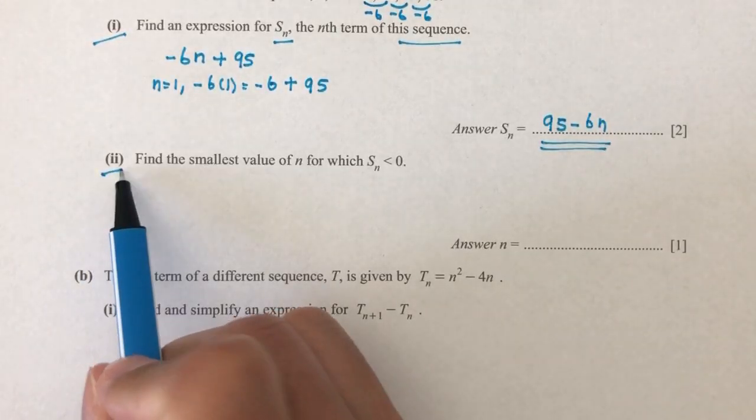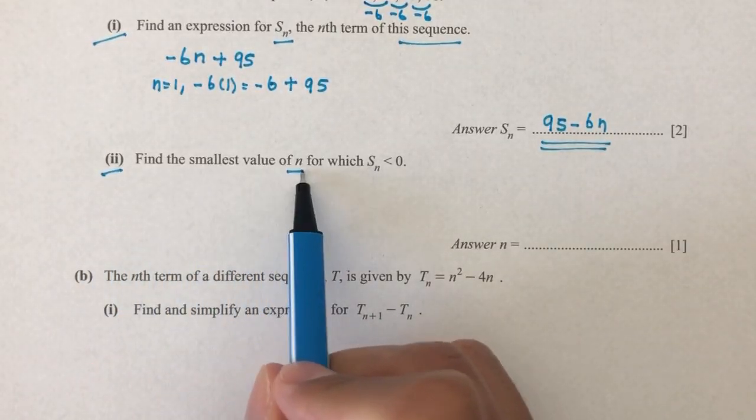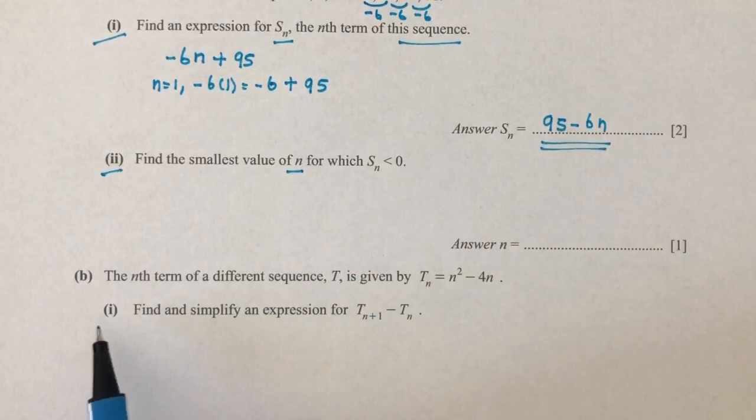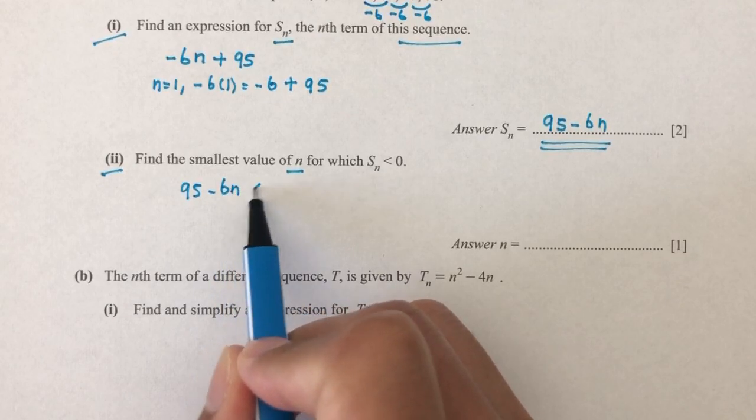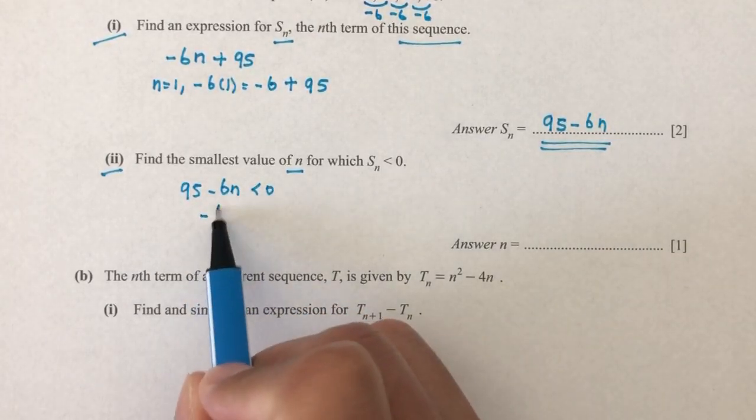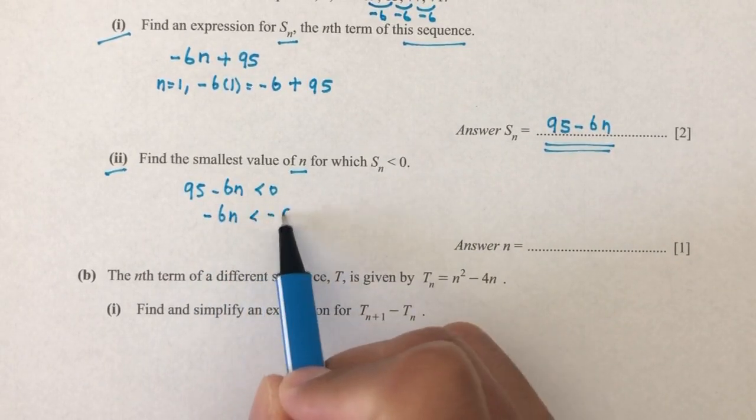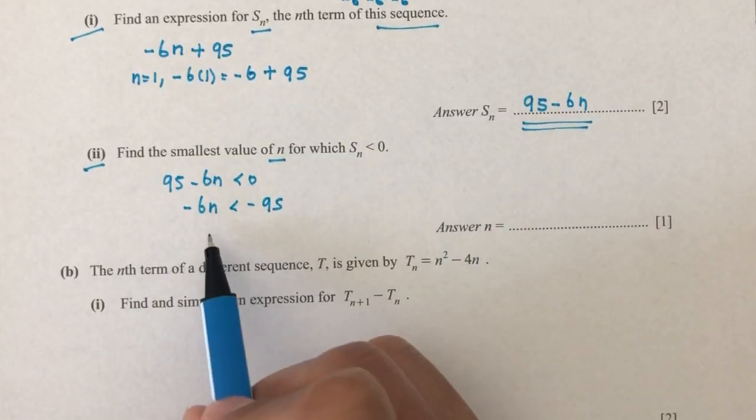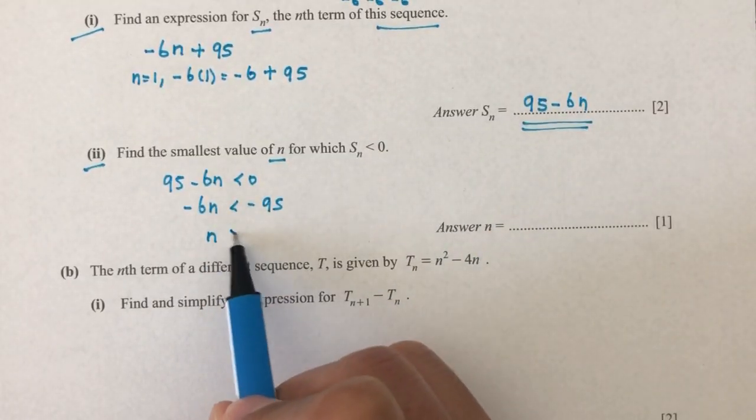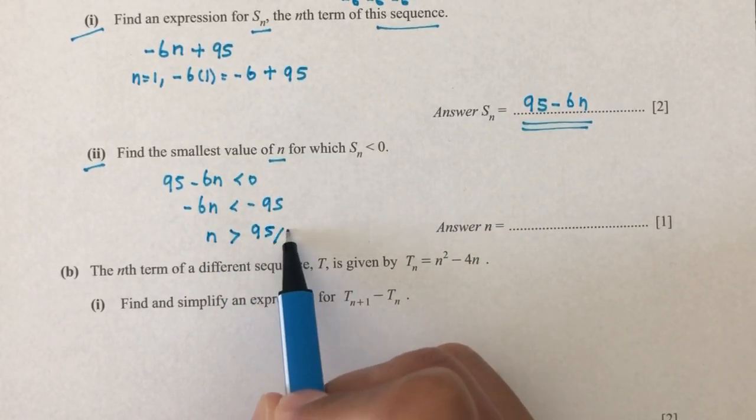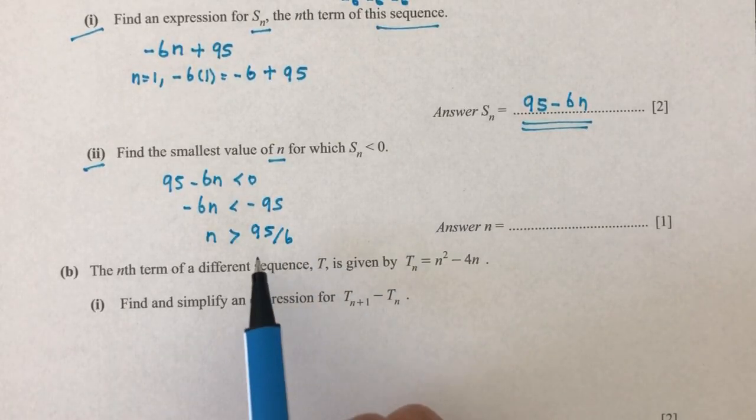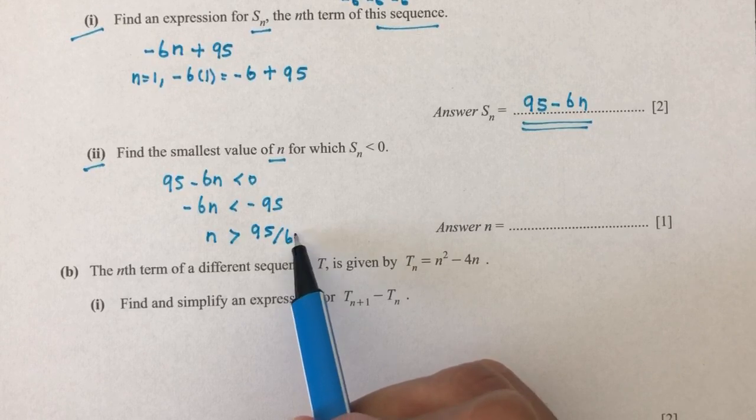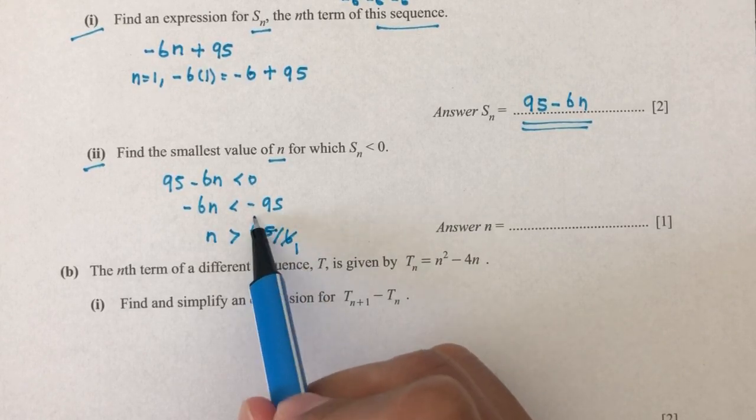Now for part two: find the smallest value of n for which S_n is less than zero. Let's solve 95 minus 6n is less than zero, so minus 6n is less than minus 95. When you divide by negative, the sign changes, so n is greater than 95 divided by 6. Let's divide this number by 6.